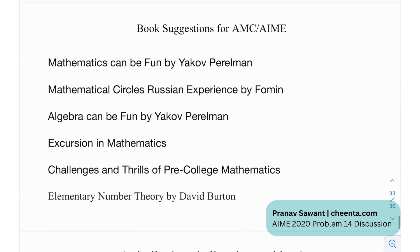Okay, so after that, we have certain book solutions for the AMC and AIME. We have Mathematics Can Be Fun by Yaakov Perelman, Mathematical Circles The Russian Experience by Fomin, Algebra Can Be Fun by Yaakov Perelman, and Excursion Mathematics, Challenges and Thrills of Pre-College Mathematics, and Elementary Number Theory by David Burton.